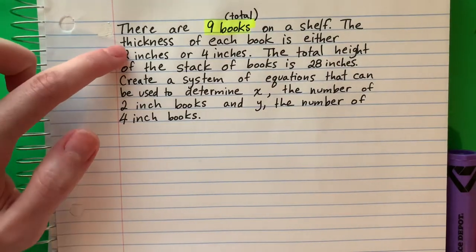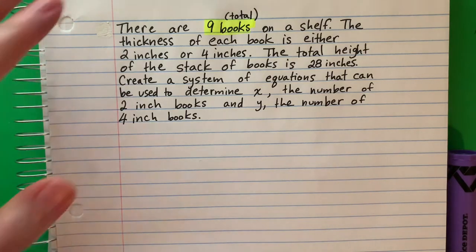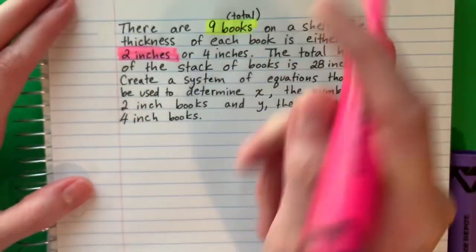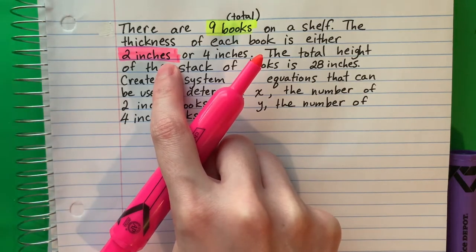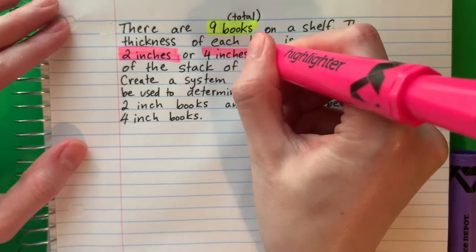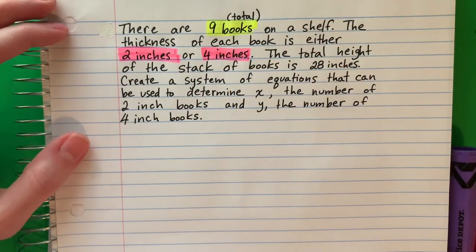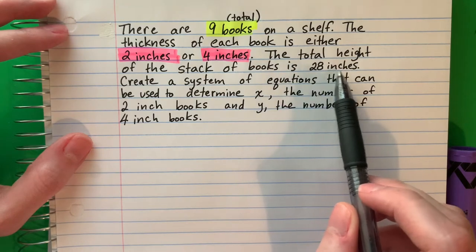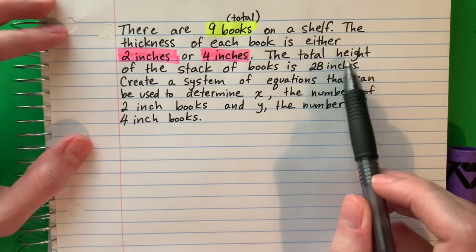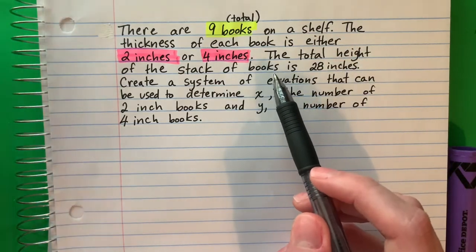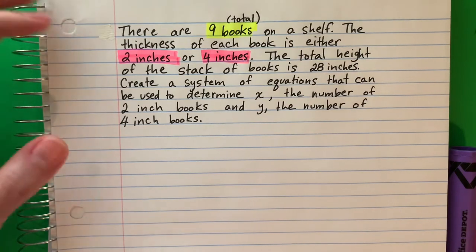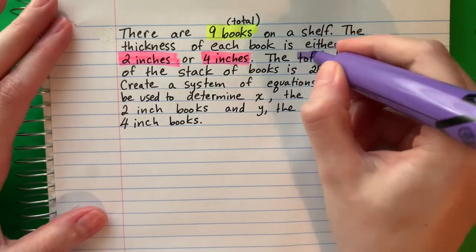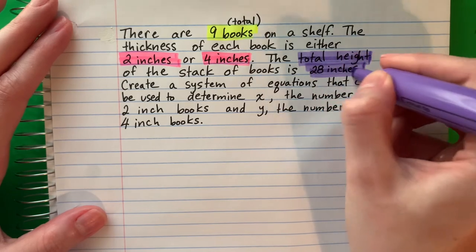The thickness of each book is two inches or four inches. So I have two types of books - two-inch books and four-inch books. The total height of the stack of books is 28 inches. I'm going to color that because that's also important. So total height is 28 inches.